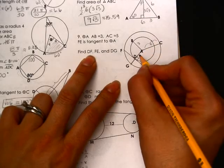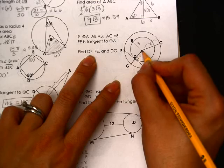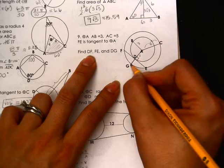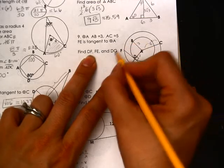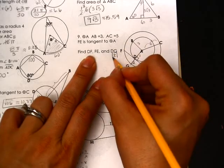So first of all, this is 3, this portion right here, and the whole thing was 5. So then that means that is 2. So we've got that little part there.